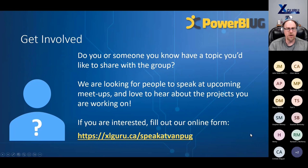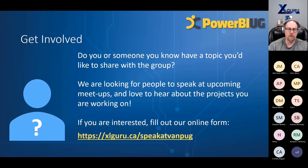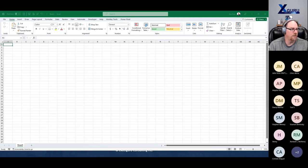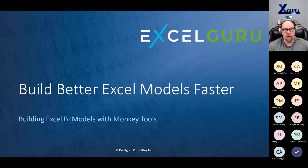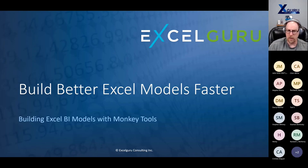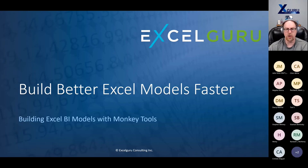If you're interested in speaking at VanPug, we always love to get new speakers. We're still looking for speakers for our 2023 calendar — if you've got cool stuff to show about Power BI, Excel, or anything in the Power Platform, don't hesitate to get in contact. You can fill out the form at xlguru.ca/speak-at-VanPug. I'm now going to close this deck and switch to a different one. I promised a session on what's new in Monkey Tools — I'll start with the general Build Better Excel Models Faster presentation just in case not everyone knows the different pieces.